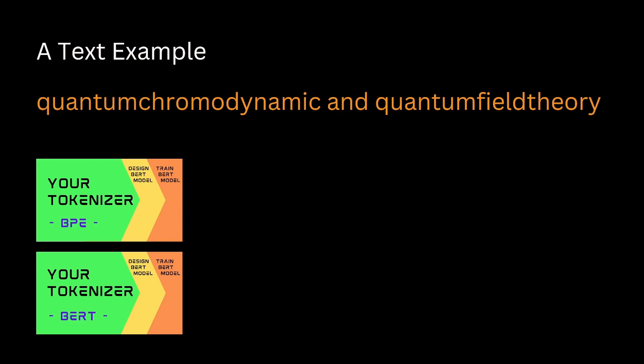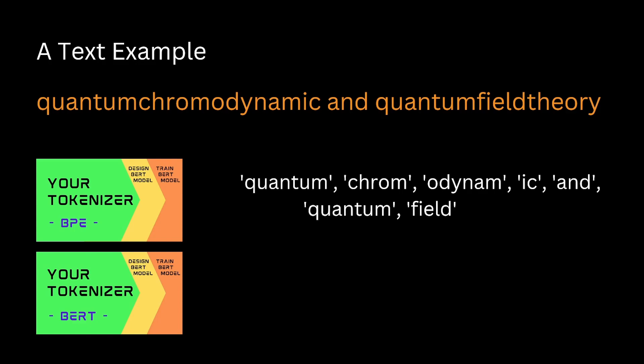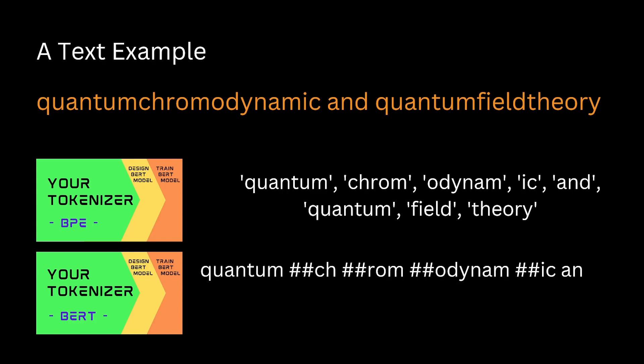Let me give you an example. Two terms from science: 'quantum chromodynamics' from physics, and 'quantum field theory' from theoretical physics. BPE splits 'quantum chromodynamics' into four different tokens and 'quantum field theory' into three different tokens. Now BERT's WordPiece makes it a little different — the second token from BPE, 'chrom', is now split into 'ch' and 'rom', and 'theory' is also split again. You have a completely different structure of your vocabulary, where each token has an assigned numerical value. So choose wisely.